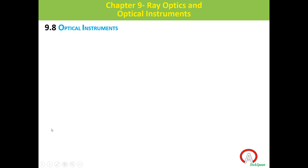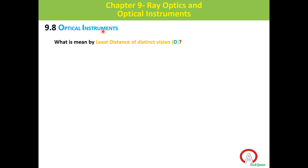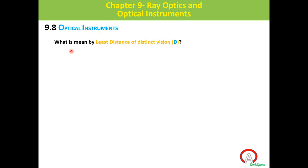We will start a new topic: optical instruments. We have different kinds of optical instruments. We will study microscopes and telescopes under this topic. Microscopes can be classified into two categories: simple microscope and compound microscope. Before going to derivations and concepts, we will study some important terms that are very important and that we need to apply in the derivations of all these microscopes and telescopes.